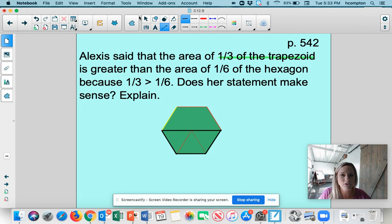Alexis said that the area of one-third of the trapezoid, okay, so that would be this. One-third of the trapezoid is greater. Oh, my goodness. I said the word Alexis from the story, and Alexa started talking to me. Oh, my gosh. Okay. So Alexis said that the area of one-third of the trapezoid is greater than the area one-sixth of the hexagon. Okay. So here's one-third of the trapezoid, and let's see. One-sixth of the hexagon would be, oh, well, the hexagon would actually be this whole thing, right? So this entire figure would be the hexagon.